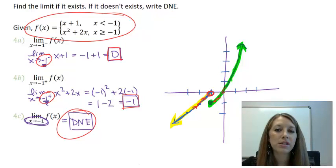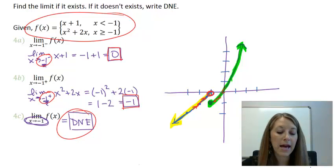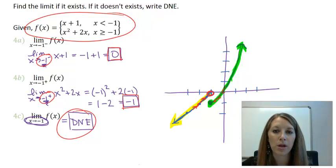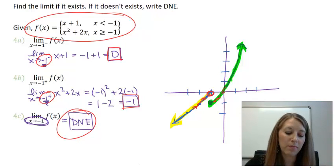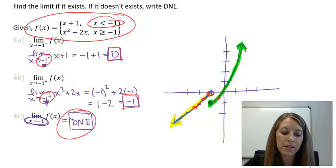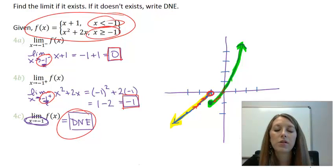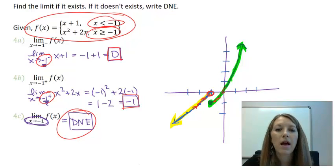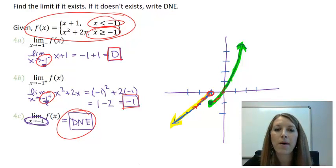This finishes the computational technique for one-sided limits with piecewise functions: for the limit from the left, use the left-hand piece; for the limit from the right, use the right-hand piece. I'll have one more video covering an applied problem — how one-sided limits appear in a real-life setting.